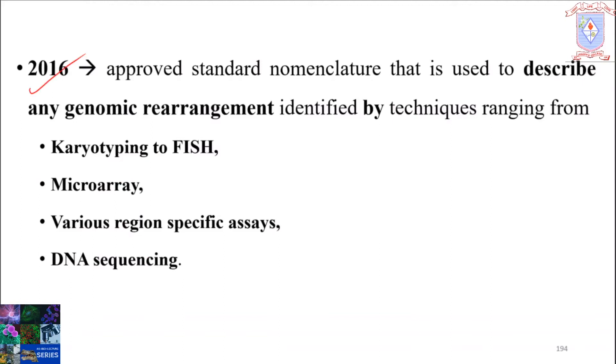The ISCN 2016 approved standard nomenclature that is used to describe any genomic rearrangement identified by techniques ranging from karyotyping to FISH, microarray, various region-specific assays, and DNA sequencing.